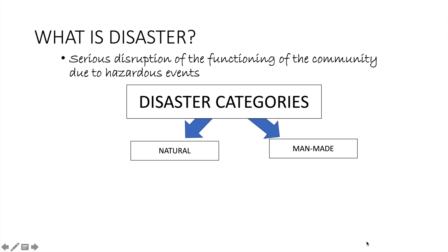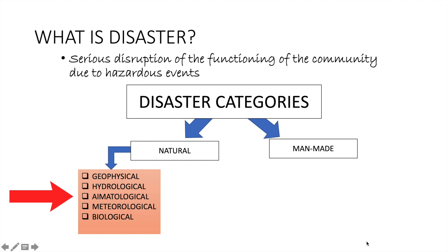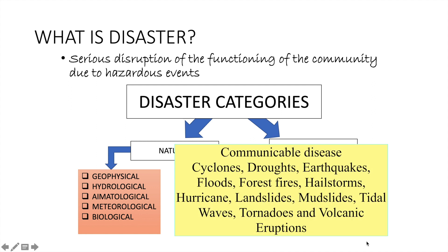We have two categories: natural and man-made. In the natural category, we can have geophysical, hydrological, climatological, meteorological, and biological types. Examples include communicable diseases, cyclones, droughts, earthquakes, floods, forest fires, hailstorms, hurricanes, landslides, mudslides, tidal waves, tornadoes, or even volcanic eruptions.